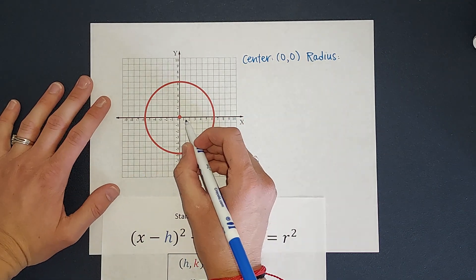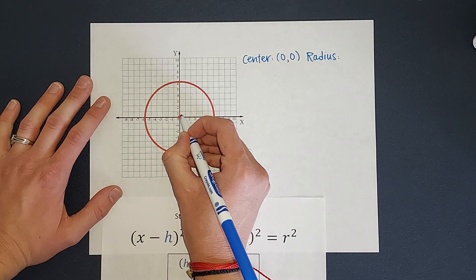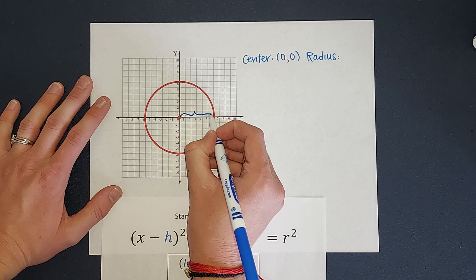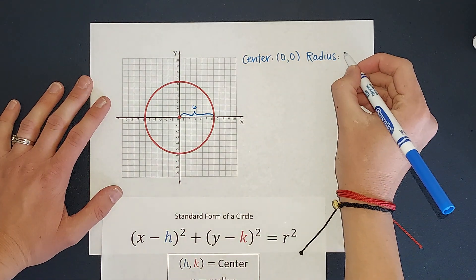But I can just count it here where it's one, two, three, four, five, six. So that distance right there, which is the radius, is six. My radius is six.